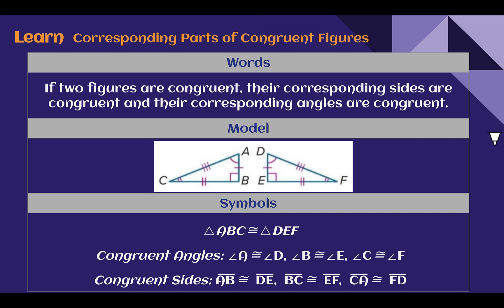So let's put this all together. If two figures are congruent, then their corresponding sides are also congruent, and their corresponding angles are congruent. We just saw with our picture here, the things that match in each of the figures are congruent. So overall, triangle ABC is congruent to triangle DEF.